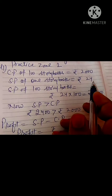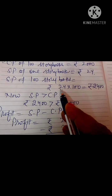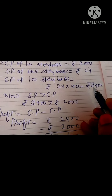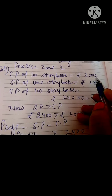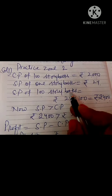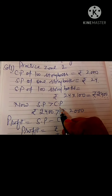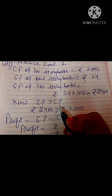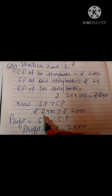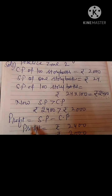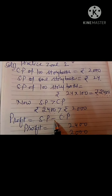Selling price of one story book is rupees 24. So selling price of 100 story books will be rupees 24 multiplied by 100, which is equal to rupees 2400. Now the cost price of 100 story books is rupees 2000 and selling price of 100 story books is rupees 2400 — meaning selling price is greater than cost price. So if selling price is greater than cost price, then there will be profit.